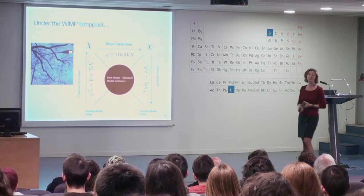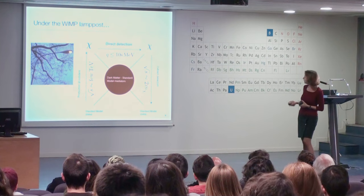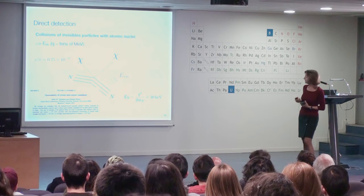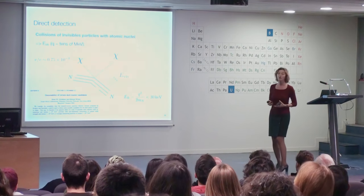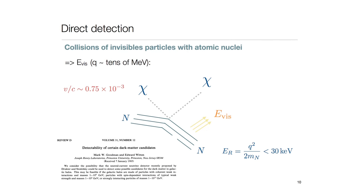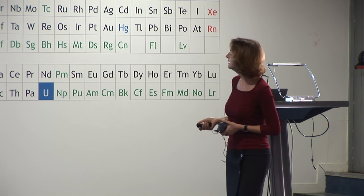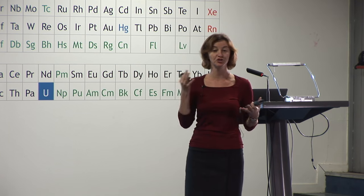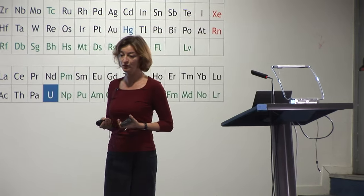And then finally, there is direct detection, which looks for collisions of these invisible particles with atomic nuclei. An incoming WIMP scatters in a material, mostly elastically off an entire nucleus, and then leaves the detector unobserved. However, what you can observe is a small nuclear recoil energy that is transferred onto that atomic nucleus.